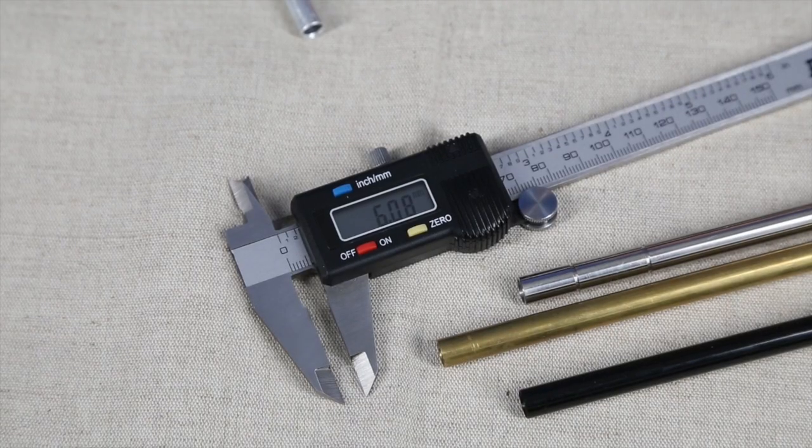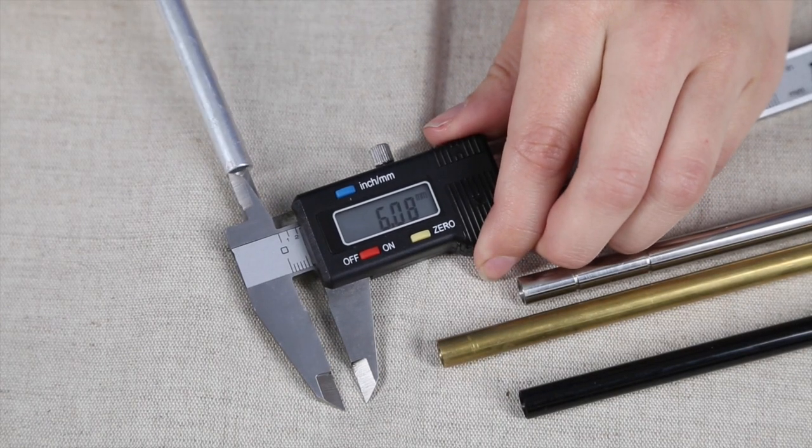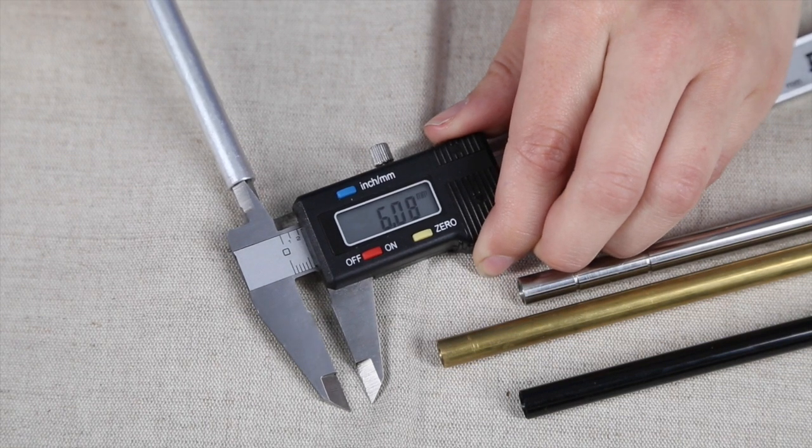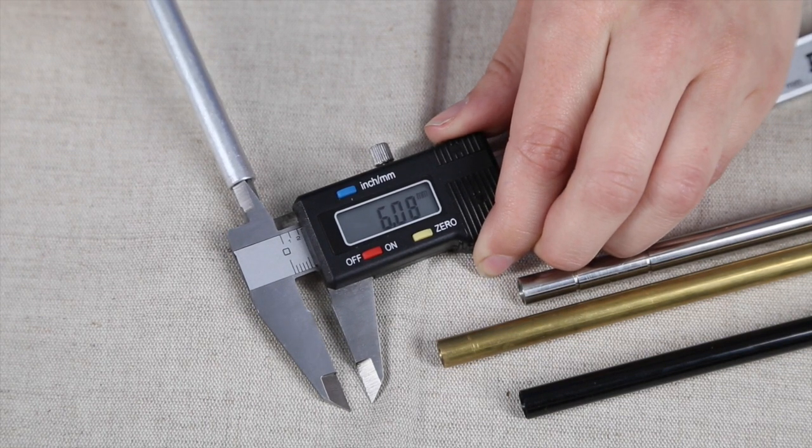Many Airsoft manufacturers supply a barrel with a diameter between 6.05 mm and 6.08 mm. These work well, but they can be improved upon.